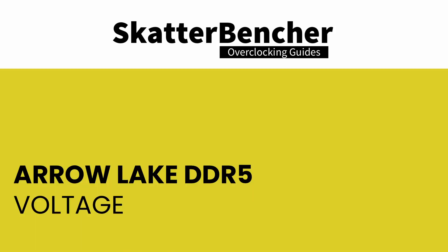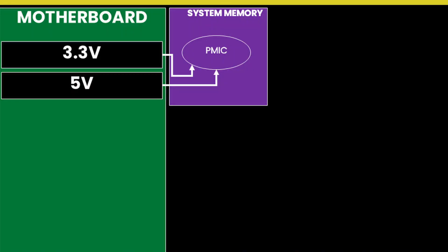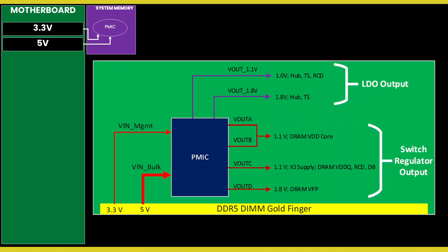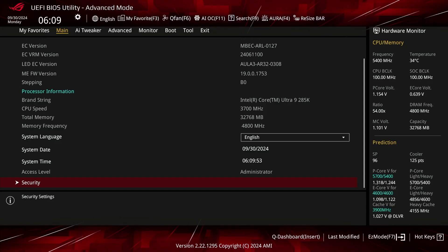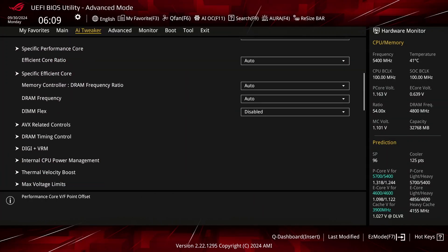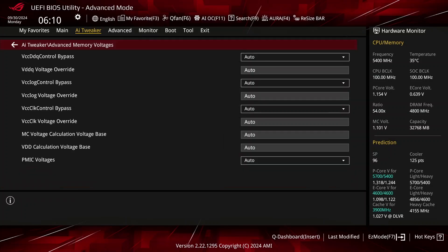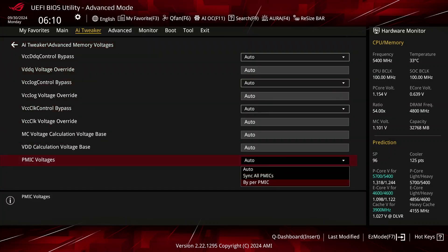The on-package DRAM Power Management Integrated Circuit, or PMIC, is responsible for the primary voltage rails for the DDR5 memory. On Arrow Lake, the DDR5 PMIC has two input voltages: 5 V and 3.3 V. The specification defines four switching output regulators for two times VDD, VDDQ and VPP, and two LDO outputs of 1.8 V and 1 V. The PMIC also has features such as I2C and I3C, over-voltage and over-temperature protection, and so on. As every DDR5 DIMM has its own PMIC, you can run separate voltages on the sticks. In the ASUS ROG BIOS, you can access the PMIC settings in the AI Tweaker Advanced Memory Voltages submenu, and change the settings of all PMICs in sync or individually.